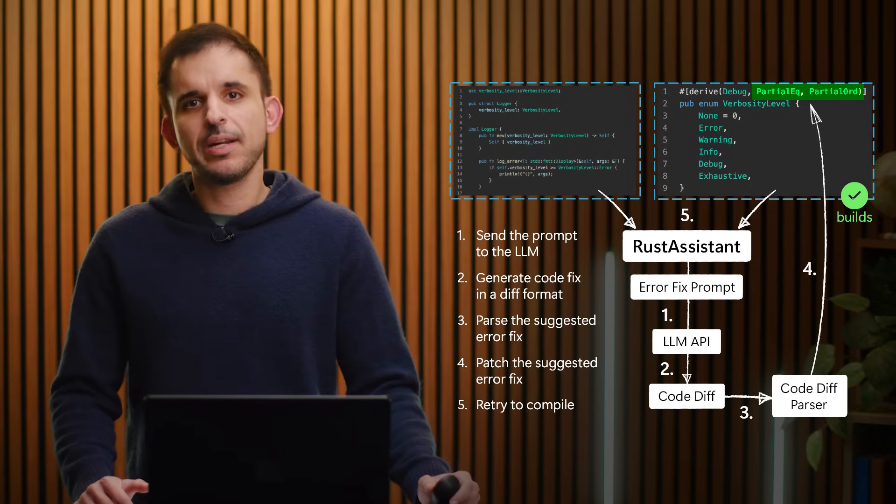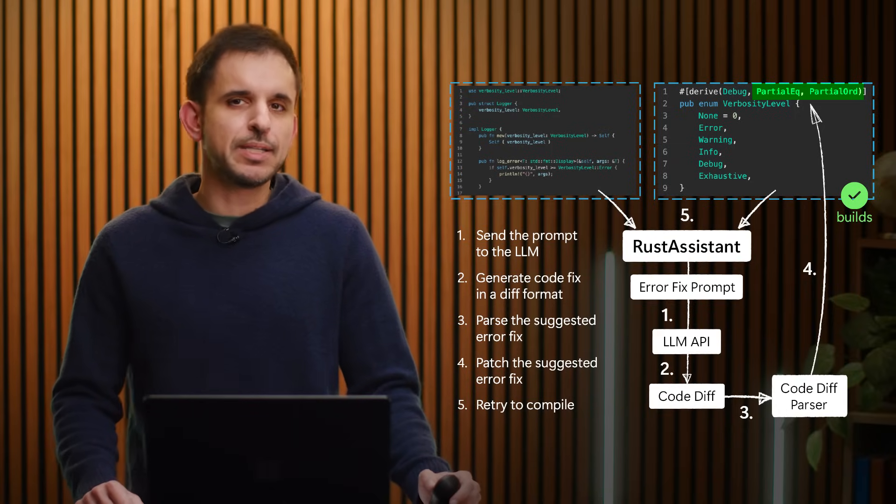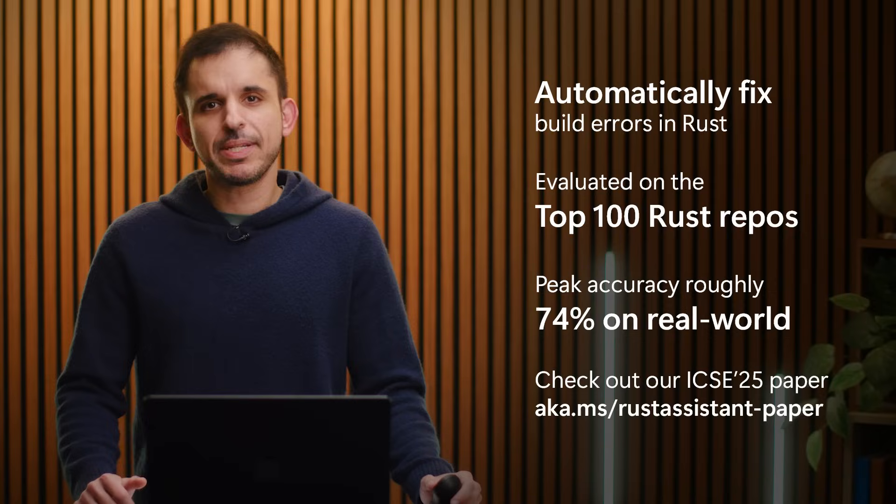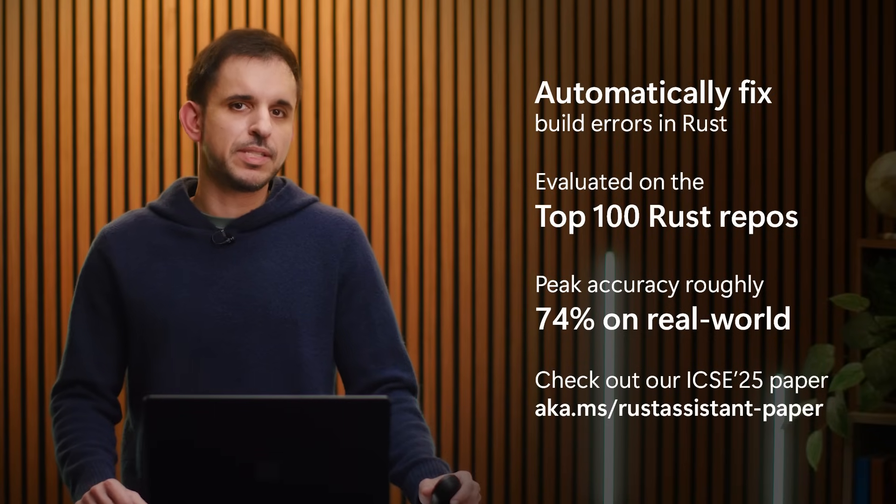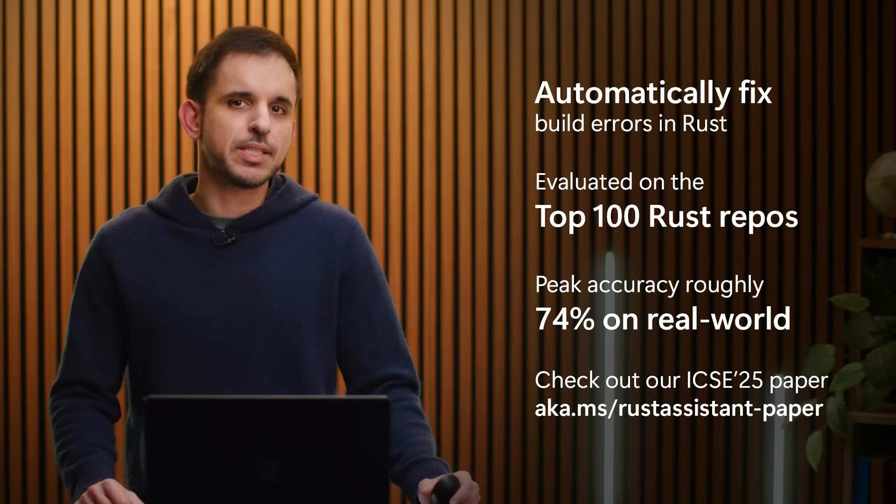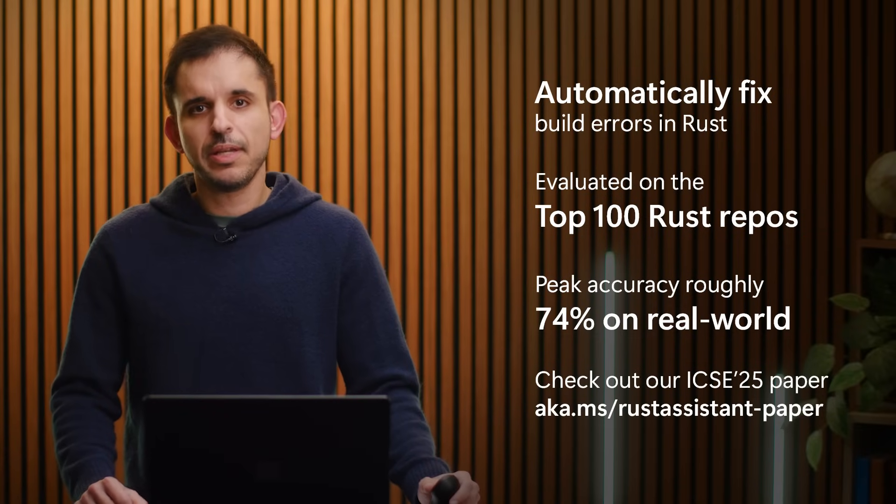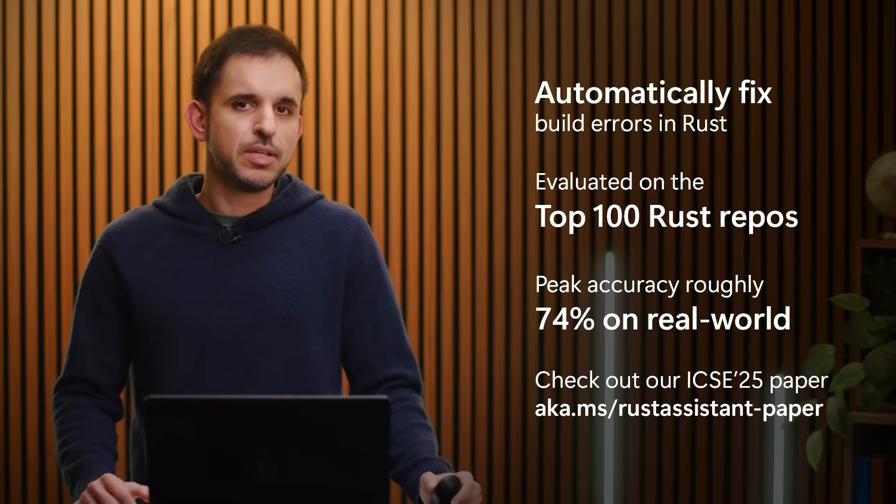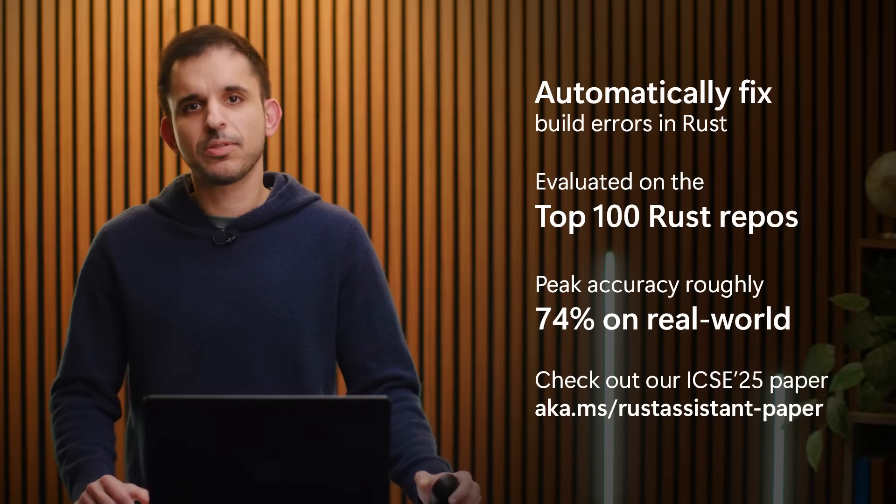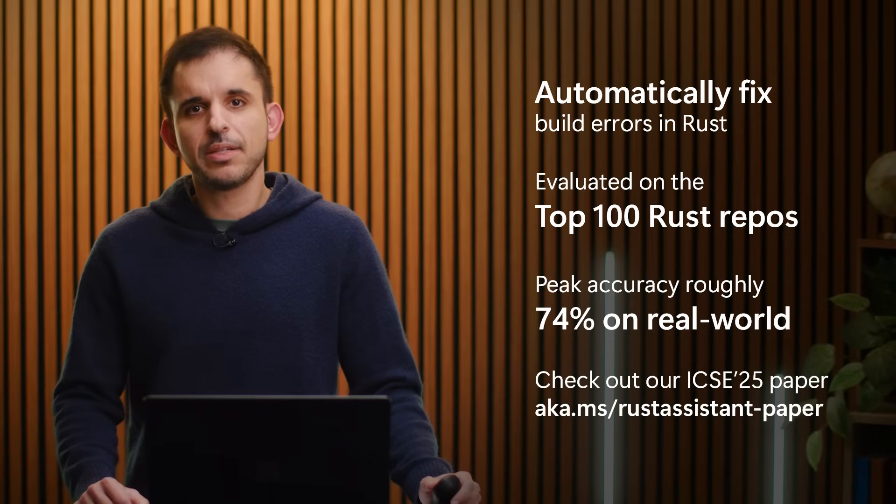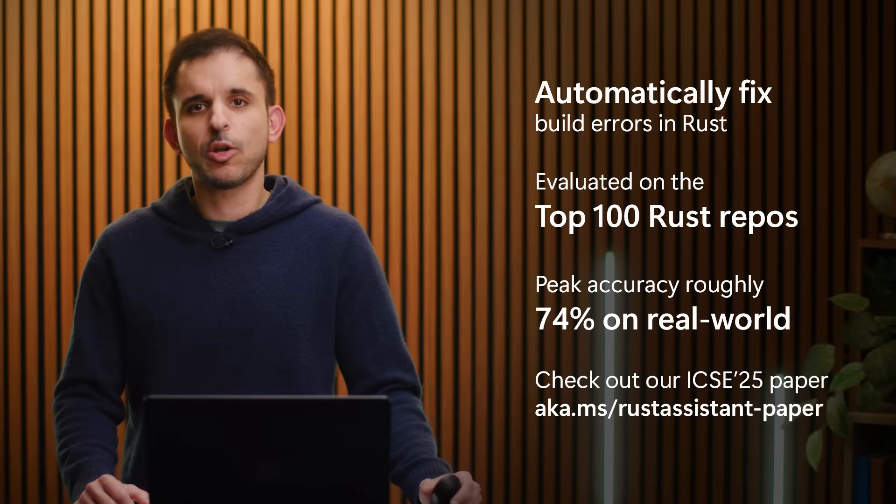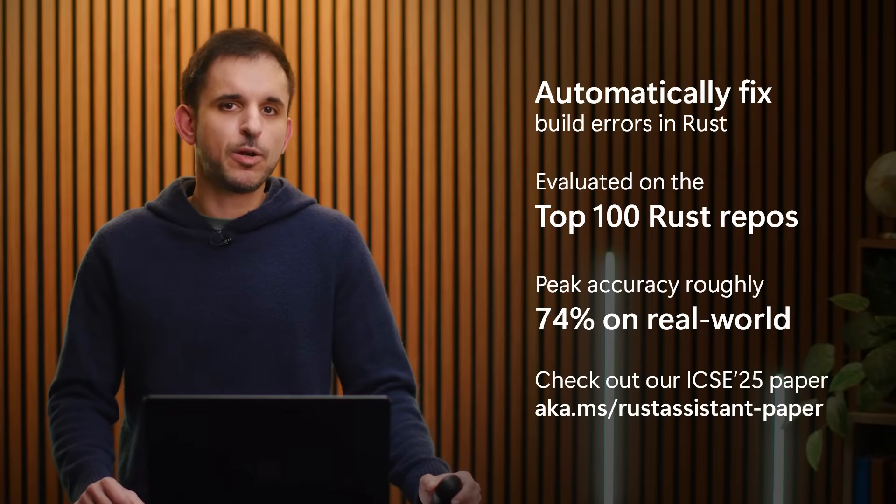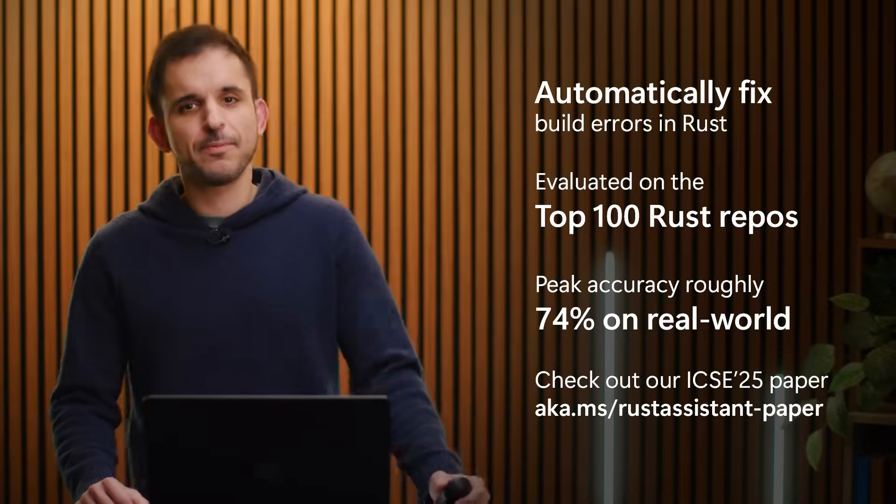Of course, the example that I showed here is a very simple one, but you can imagine the tool being able to fix much more complicated build errors. To summarize, I presented a quick walkthrough of how Rust Assistant can be used to help developers automatically fix build errors in their Rust code bases. In our paper, we evaluated Rust Assistant on the top 100 Rust repositories on GitHub, and showed that it can achieve an impressive peak accuracy of roughly 74% on real-world compilation errors. We invite you to read our ICSE paper, as it not only discusses the evaluation results in detail, but also dives into interesting technical details, such as how we designed our prompts, as well as various techniques that we developed for scaling Rust Assistant on very large code bases without losing accuracy. Thank you for listening. Thank you.